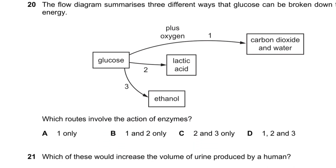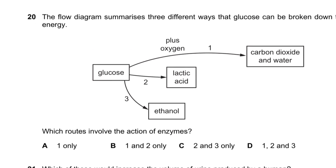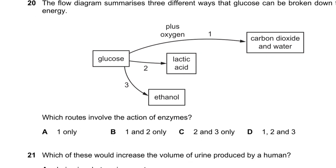Question 20: The flow diagram shows three different ways glucose can be broken down. These represent aerobic respiration in humans, anaerobic respiration in humans, and respiration in yeast. All of them require enzymes — this is something you have to know by heart. Answer is D.